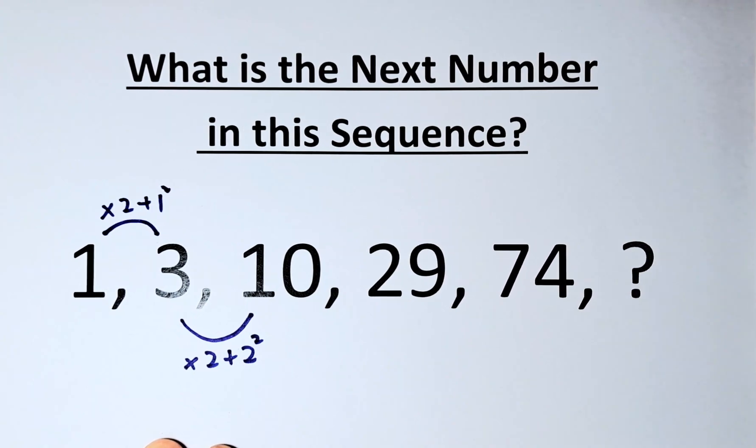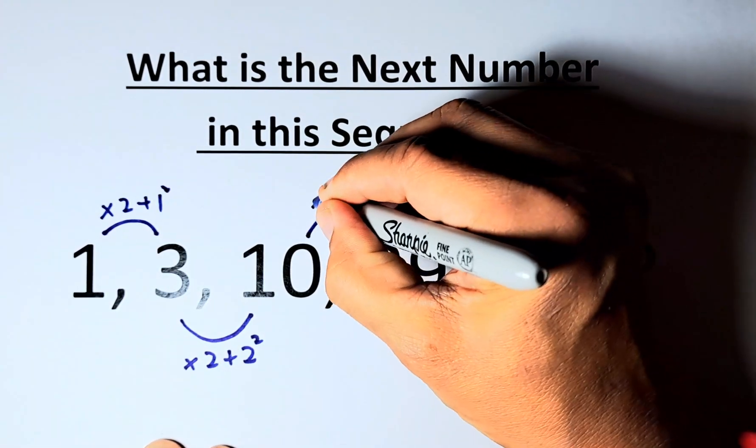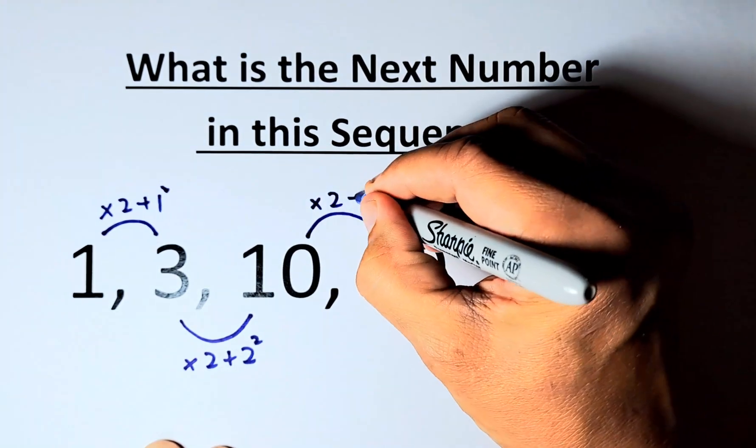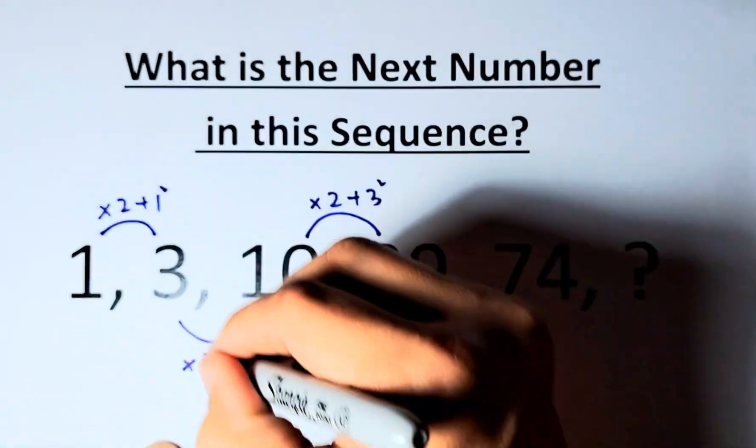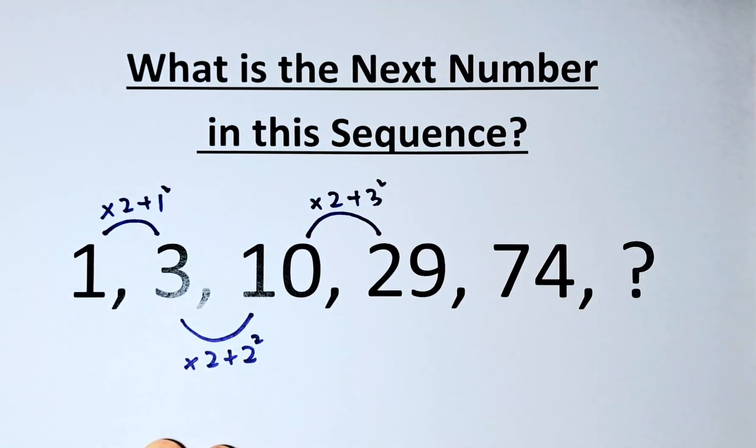Now, from 10 to 29, if you look at the pattern, it's similar. So we're going to multiply by 2 first and then we're going to add 3 squared. So 1 squared, 2 squared and 3 squared. So 10 times 2 is 20. 20 plus 9 which is 3 squared will give us 29.